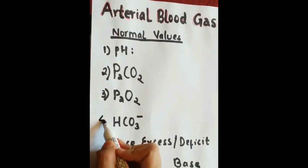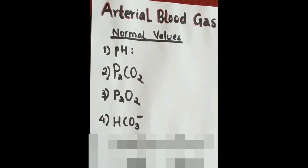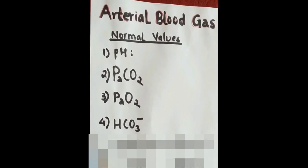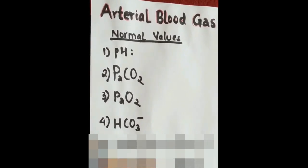Number 4 is bicarbonate level in arterial blood. It reflects how well kidney is working on reabsorption or elimination of bicarbonate.